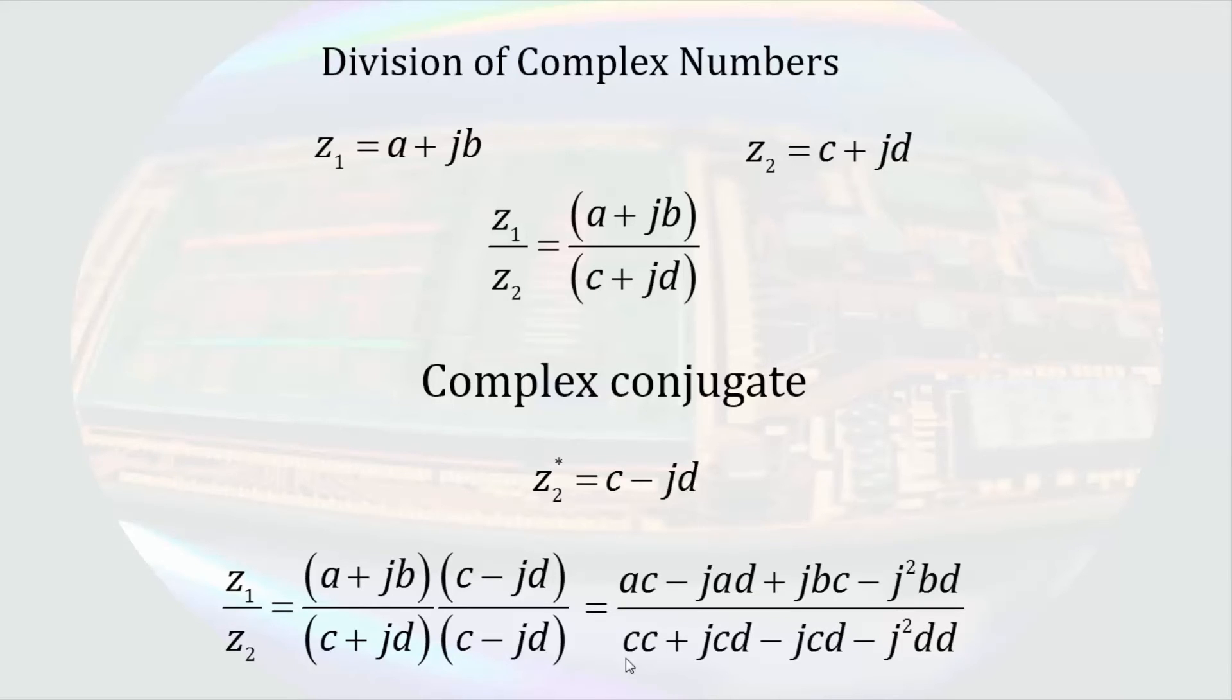Then we're going to foil out the numerator and the denominator. This looks a bit messy at first, but we can clean it up a little bit by remembering that minus j squared is simply one, and then our expression simplifies to this.